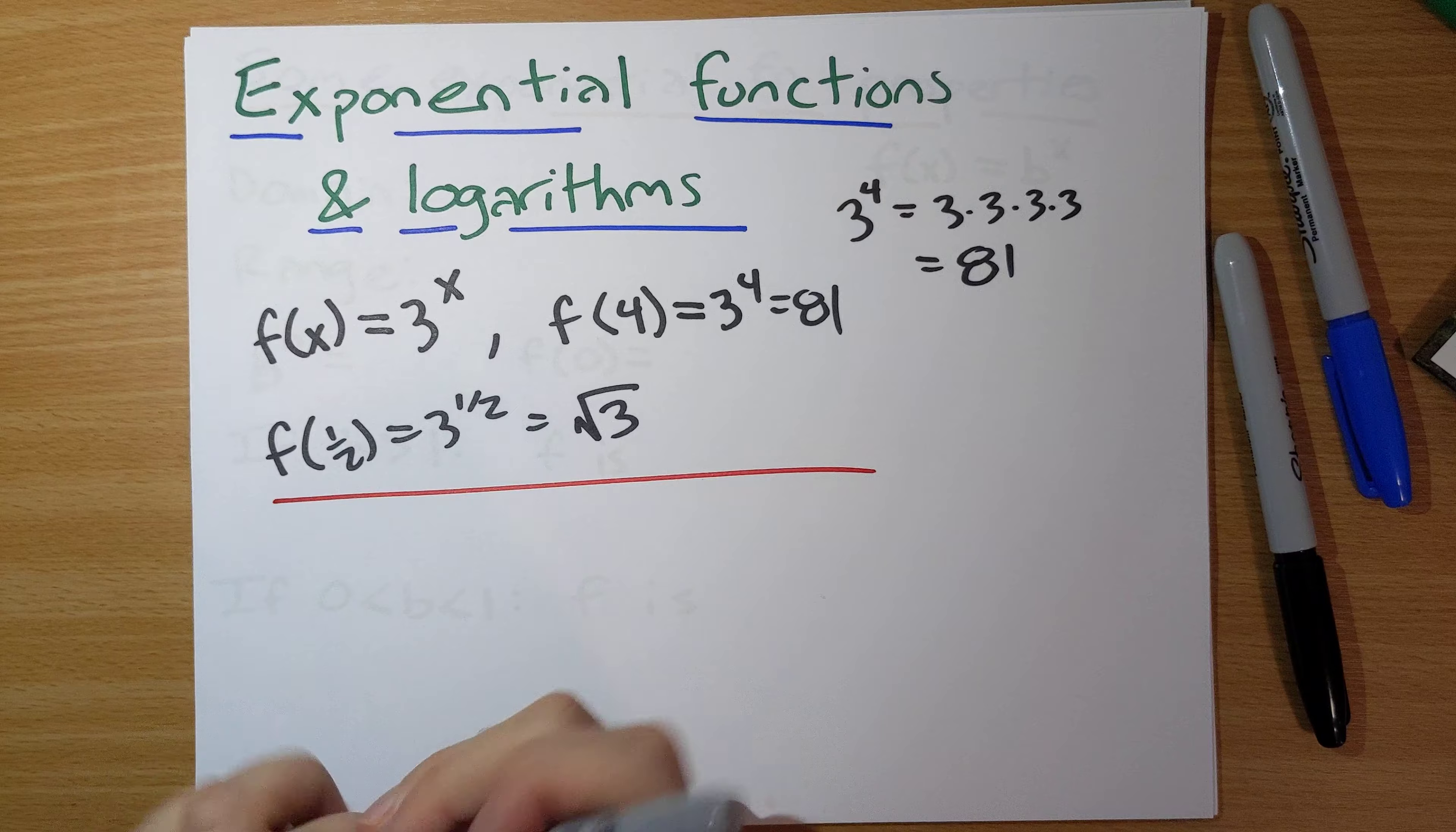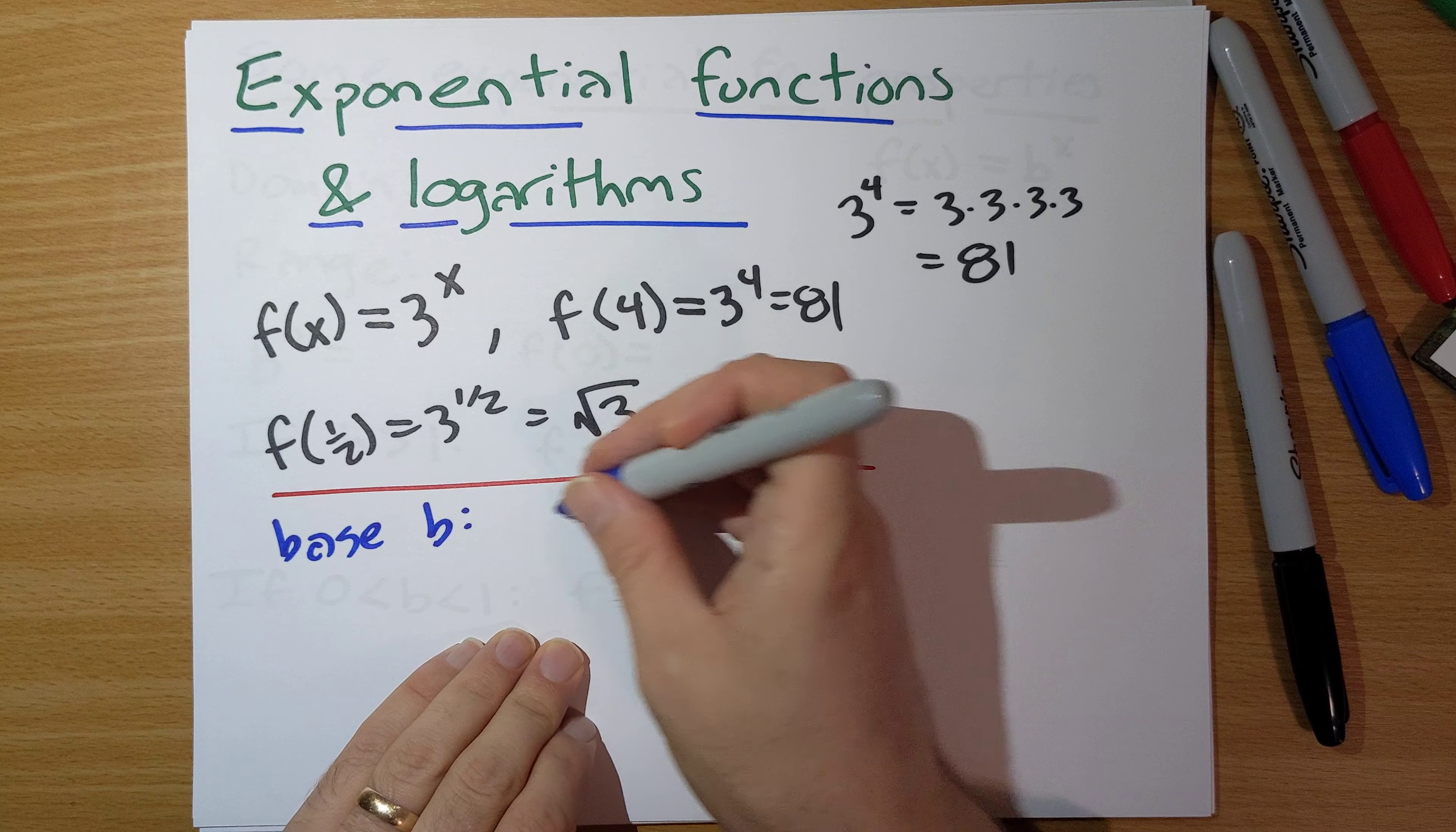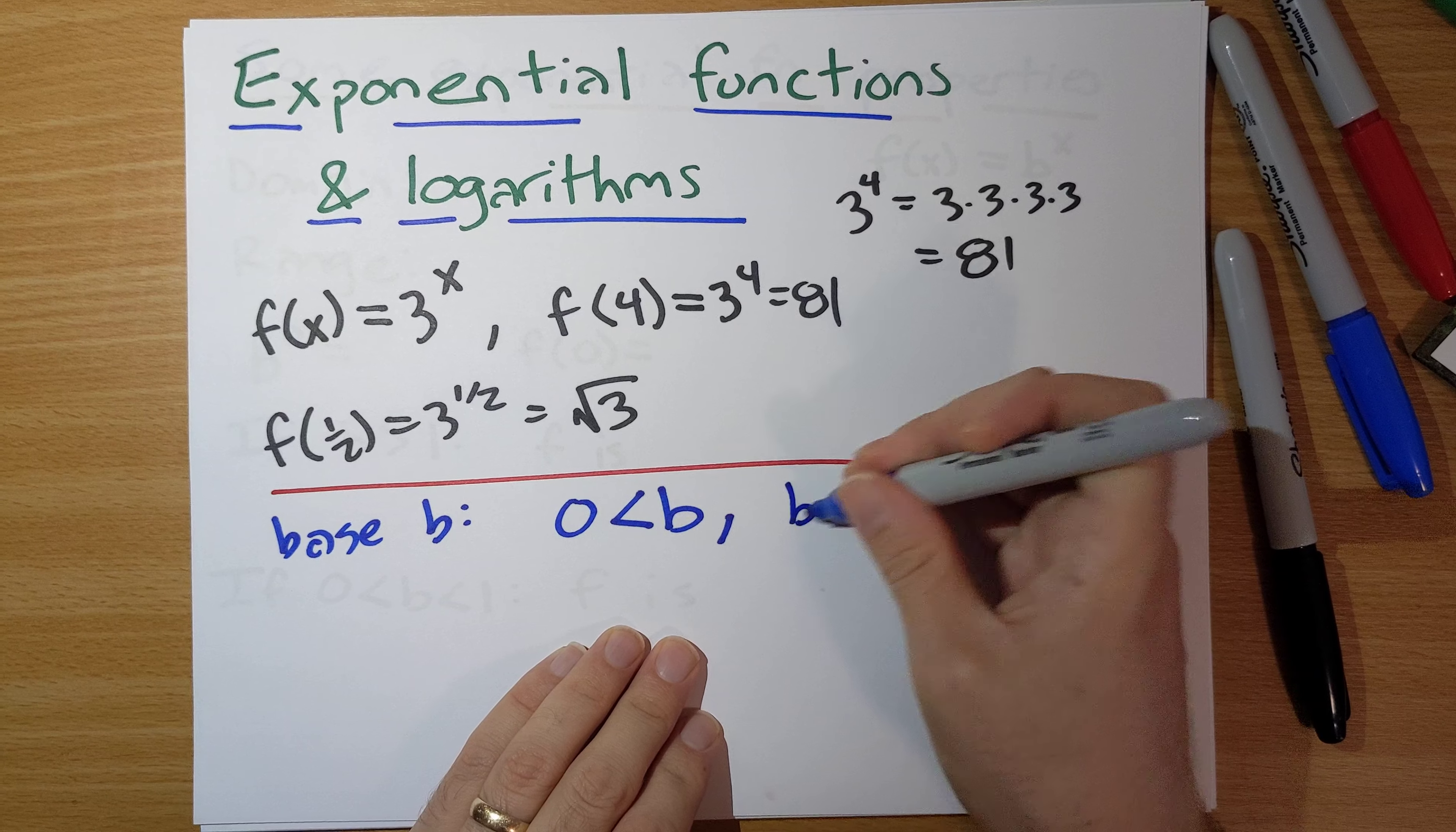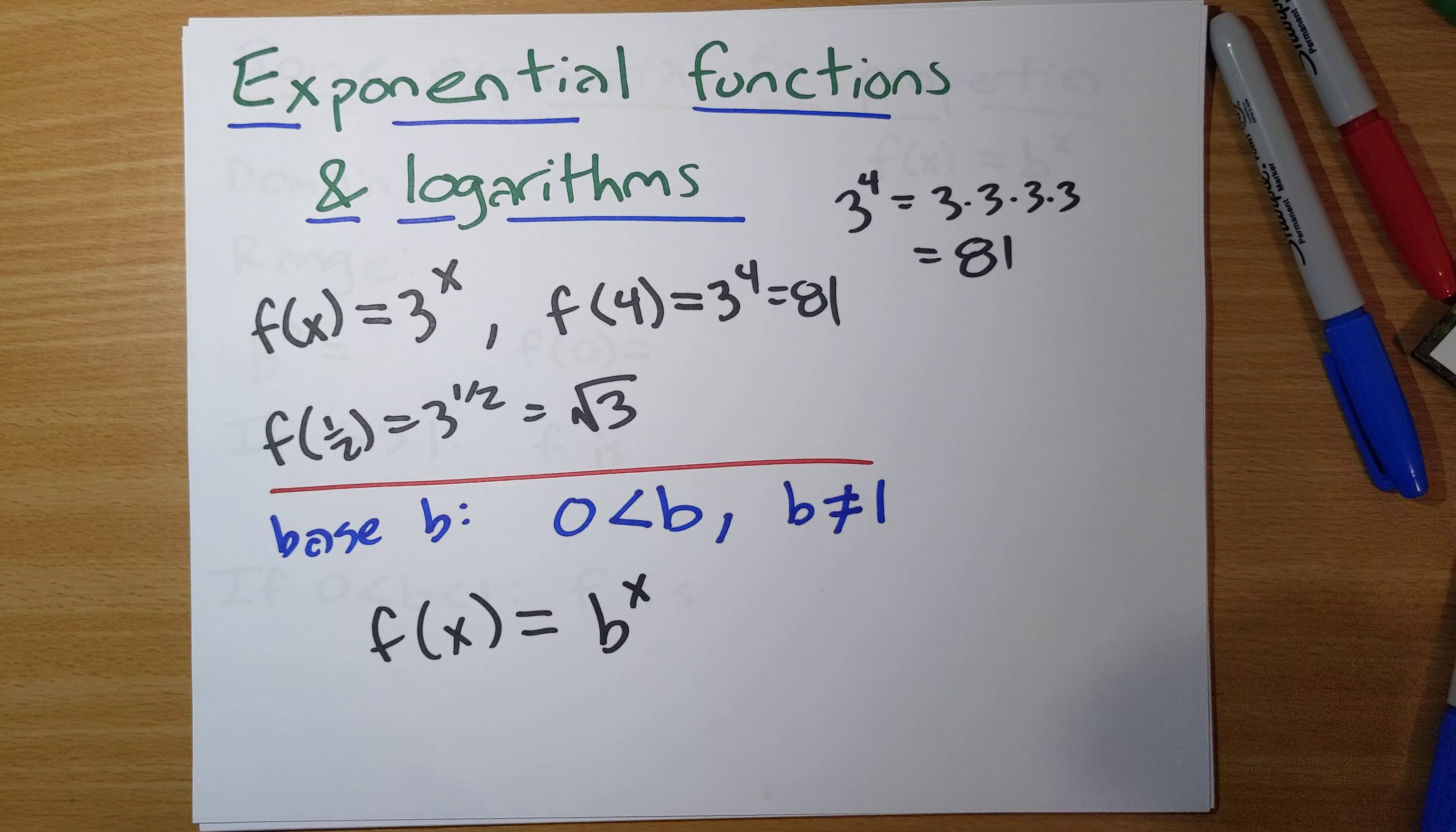For everything that we're going to be doing here, we're going to be thinking about, let's do this more generally, not just with base 3 here. But let's think about base b. B is going to be the base. In this case, b was 3. And we want to choose b so that b needs to be positive. We will run into issues if b is negative. So we want to choose b to be positive. And we also want to choose b to not equal 1. If b were equal to 1, we'd have 1 to the x. Well, 1 to any power is just going to be 1. We don't want that. So our general exponential function, f of x, is going to be b to the x.